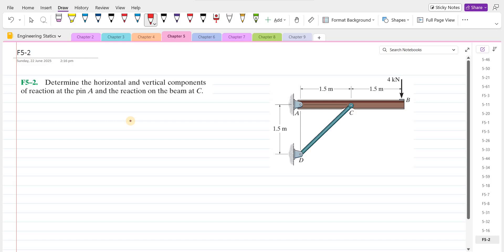Welcome back to the solutions manual. In this video, we will solve problem F5-2 from R.C. Hibaler Engineering Statics 14th edition. According to this problem, we have to determine the horizontal and vertical components of reaction at pin A and the reaction on the beam at C.